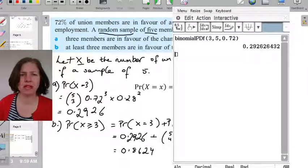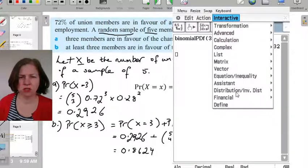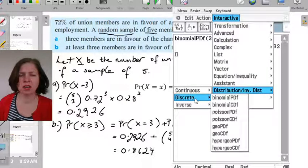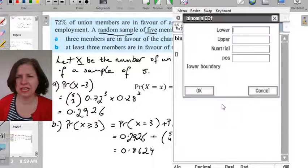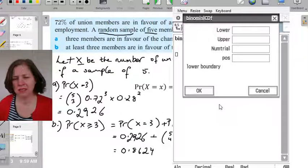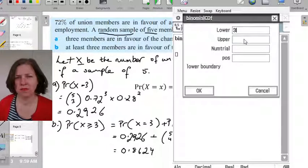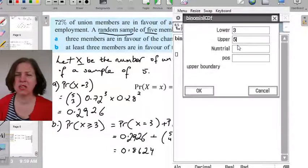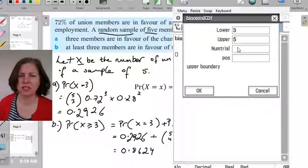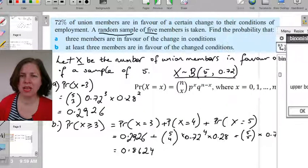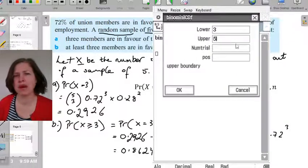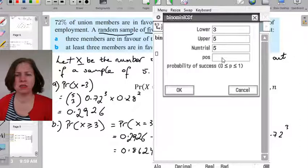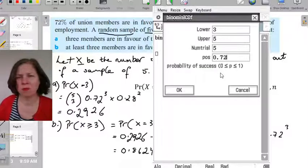So I go back to interactive, down to distributions. I'm still in discrete, I'm still in binomial, but now I'm going to choose CDF. Now it's asking me for lower and upper. If X is greater than or equal to 3, then my lower boundary is 3. My upper boundary, well I've got five trials, so the largest number that X can take is 5. So basically I am adding 3, 4, and 5, so my lower boundary is 3 and my upper boundary is 5. The number of trials is still 5 and p is still 0.72. POS just means the probability of success.